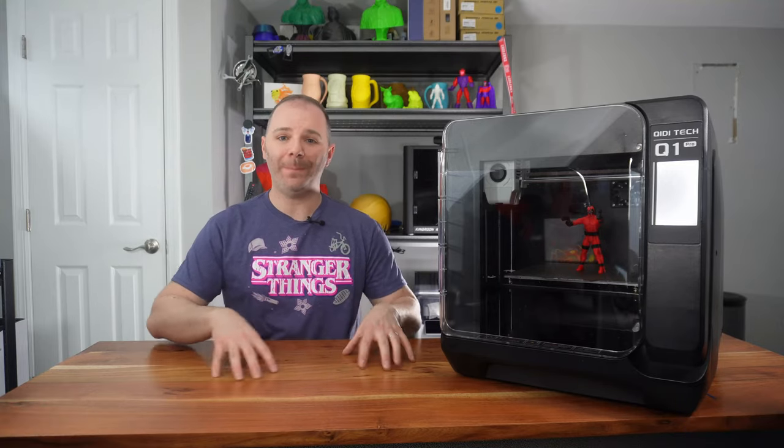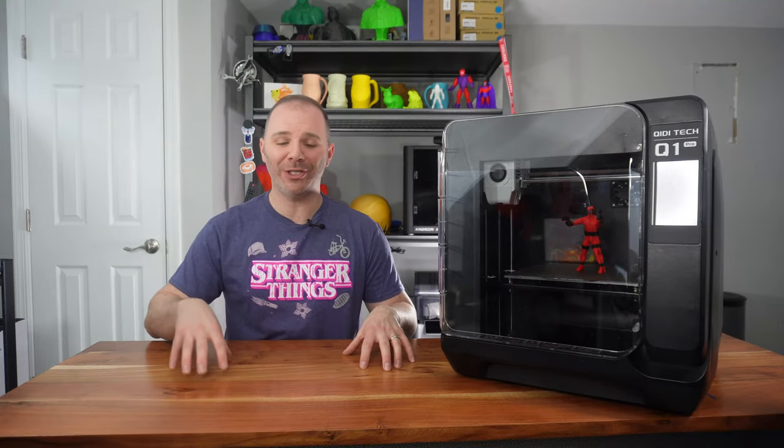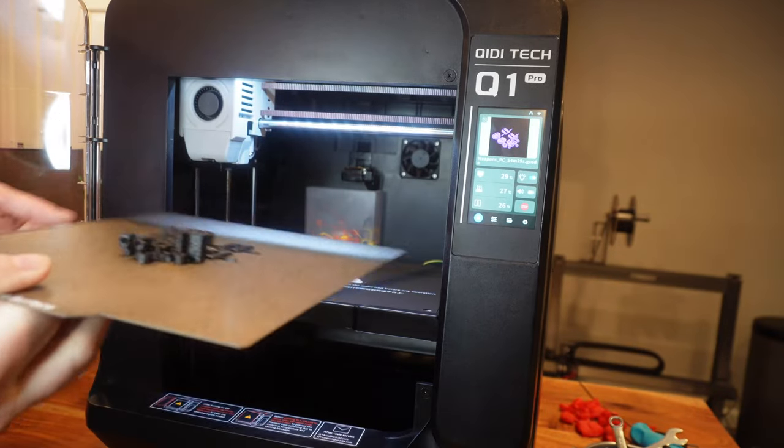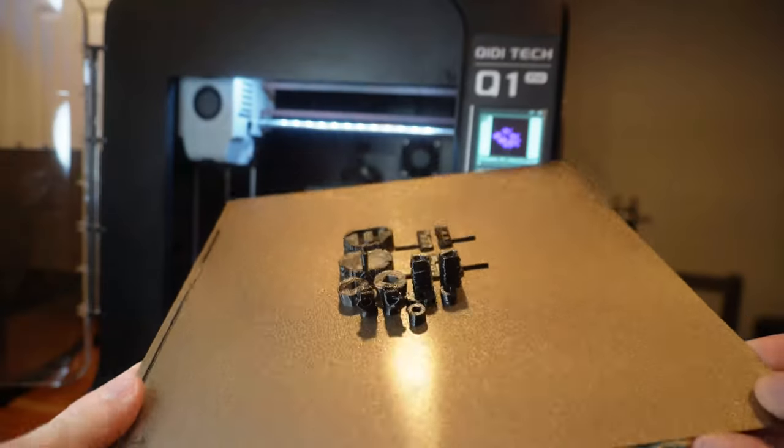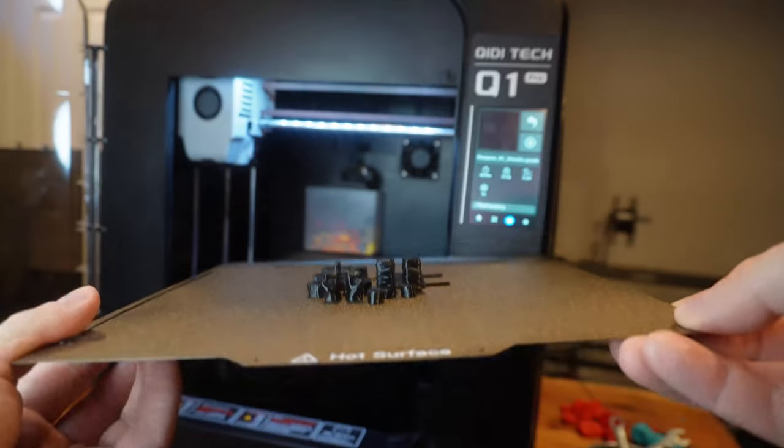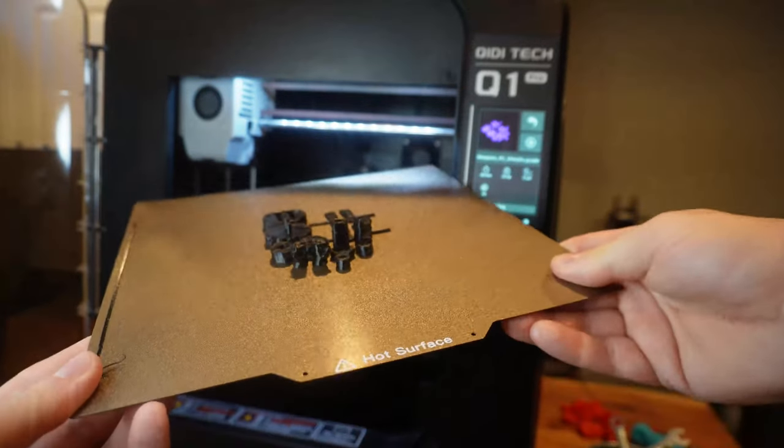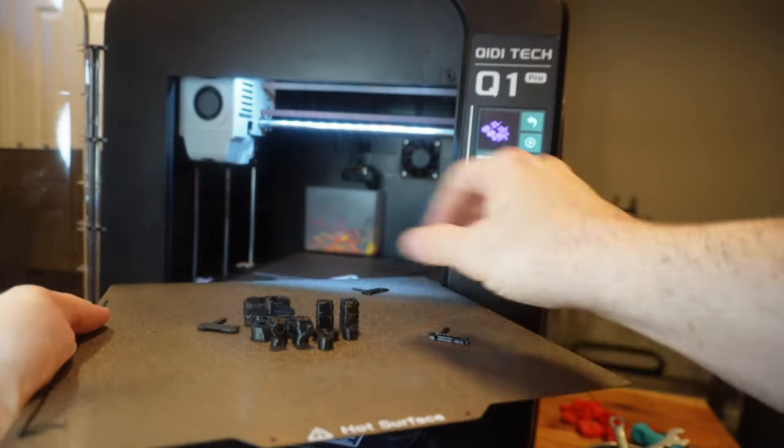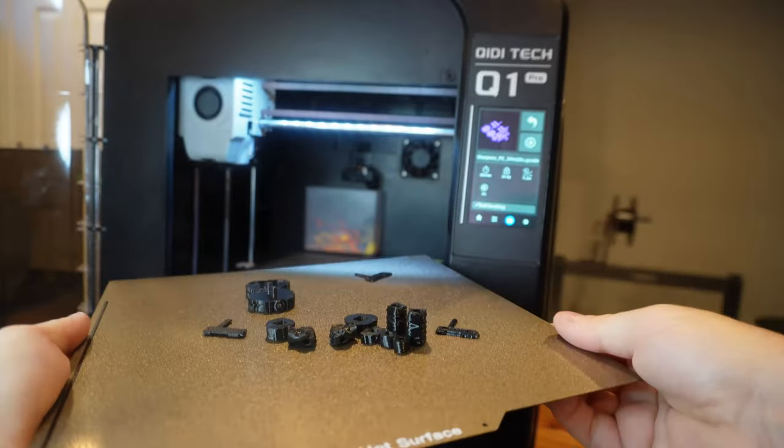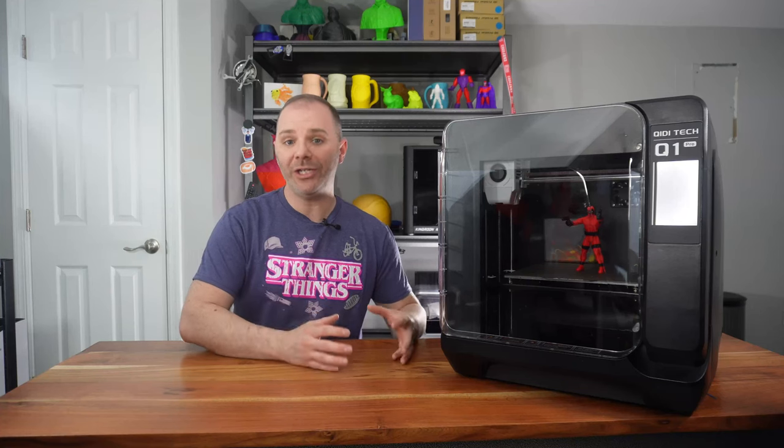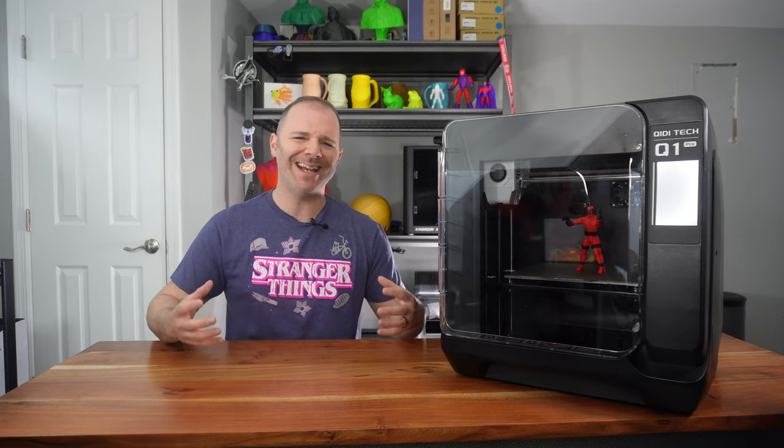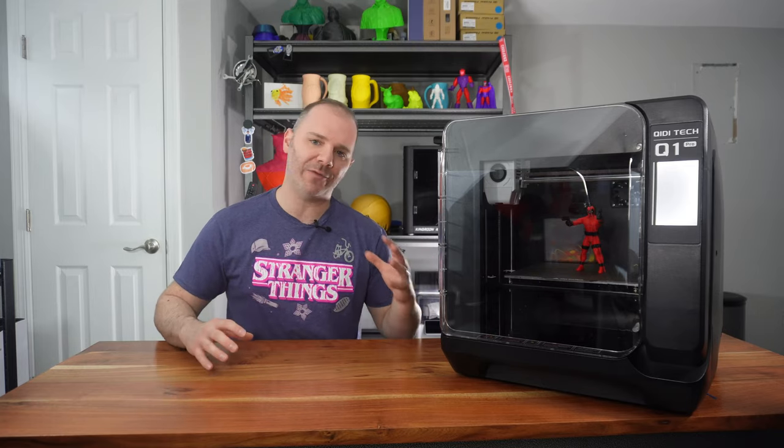This also comes with a PEI-coated spring steel bed sheet. PEI coating is great for adhesion of all types of different filaments, and the fact that it is spring steel means that once our print is finished, we can let it cool, take the bed out of the 3D printer, flex it, and our stuck-on prints pop right off. So we get the best of all the different worlds. We get great adhesion, and we also get very easy removal. So those PEI beds are A number one, and this was a great one for me. It actually had tremendous adhesion right out of the factory.